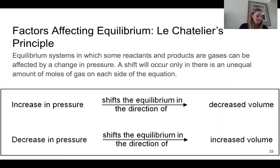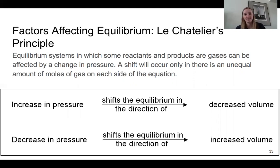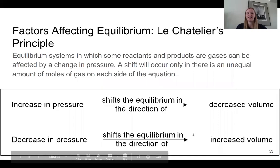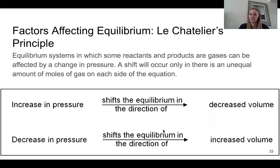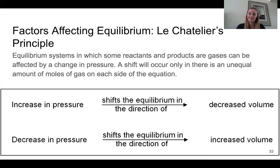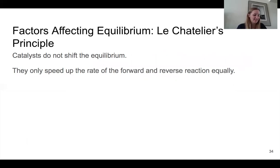Continuing on with pressure — numbers 43 and 44 — it's the same exact concept as temperature and concentration. If there's an unequal amount, it's going to shift to maintain balance. If we have too much pressure, it's going to shift the equilibrium towards the less pressurized side. If we have a decrease in pressure, it's going to shift towards the side with more pressure to maintain equilibrium.